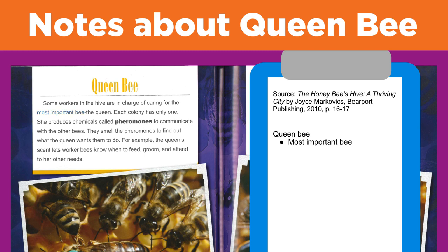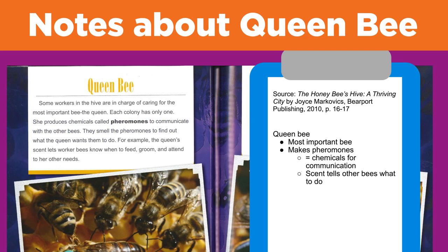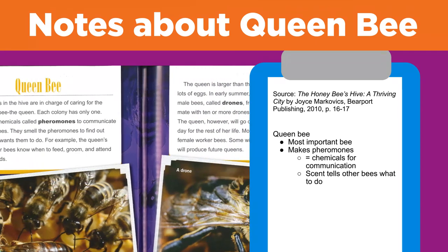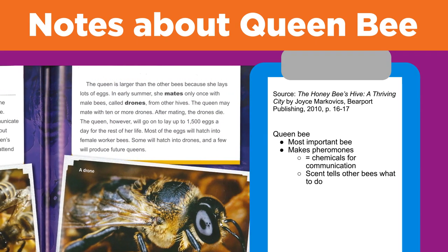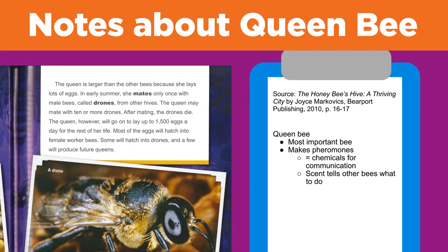What else is important? Here's a word that I don't recognize. But the word is in bold, so it must be important. What does 'pheromone' mean? I'll read to see if the book explains it — oh, here it is. I should write that down too. If I keep thinking about what information answers my questions, the rest of my notes might look something like this.